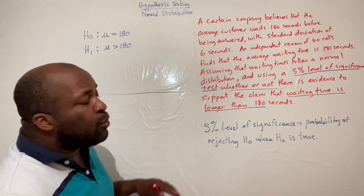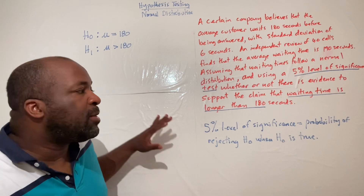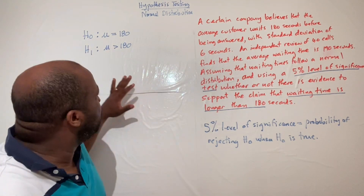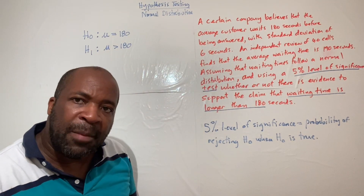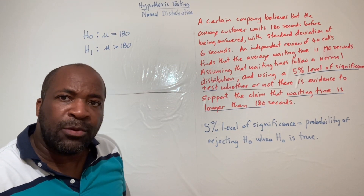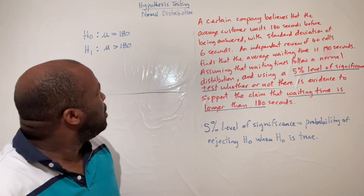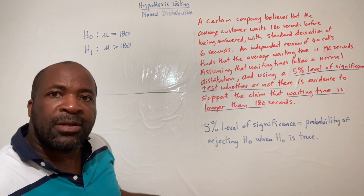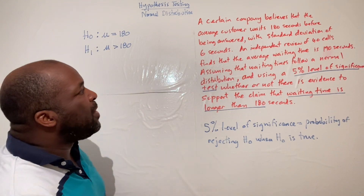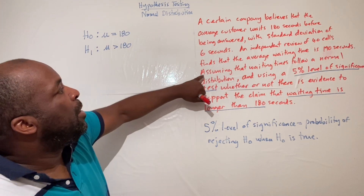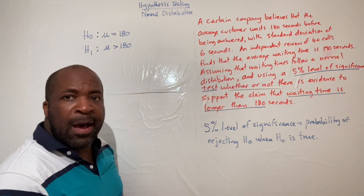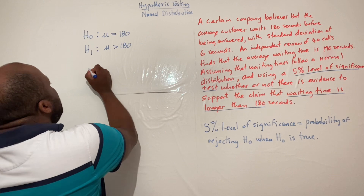Step one is always to state the hypotheses — even if the examiner doesn't explicitly ask for it. Step two is to identify the distribution. We're told the waiting times follow a normal distribution.